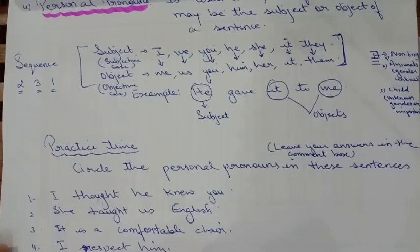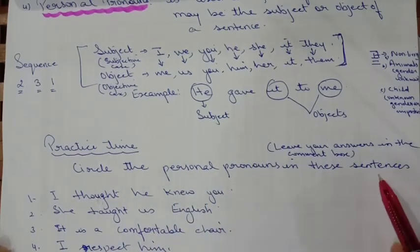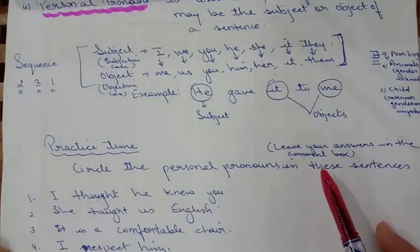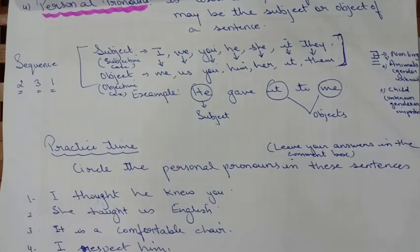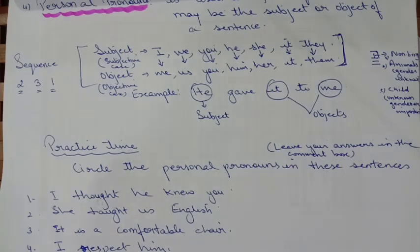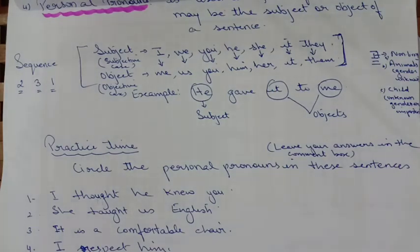Here are a few sentences and you have to circle the personal pronouns. Leave your answers in the comment box. Kindly make sure that a personal pronoun is used in place of a noun that may be the subject or object of a sentence — subjective case or objective case.